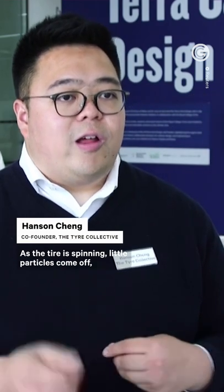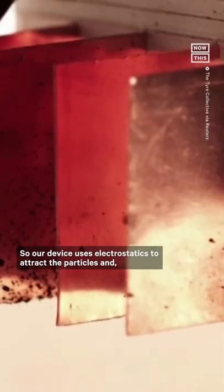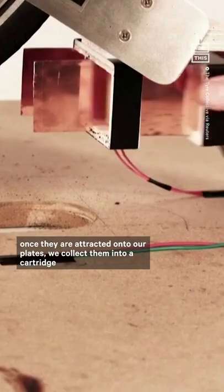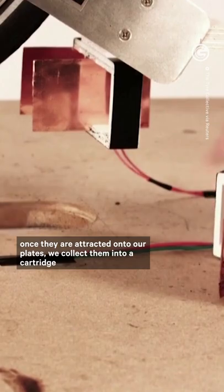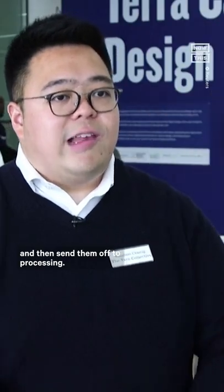As the tire is spinning, little particles come off, and we found that they're actually charged from friction with the road. So our device uses electrostatics to attract the particles, and once they're attracted onto our plates, we collect them into a cartridge, and then send them off to processing.